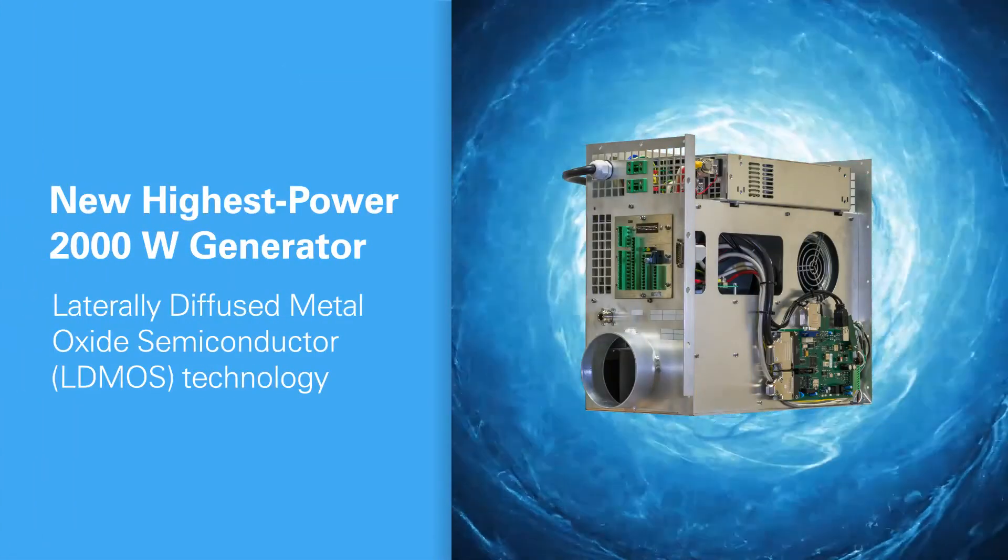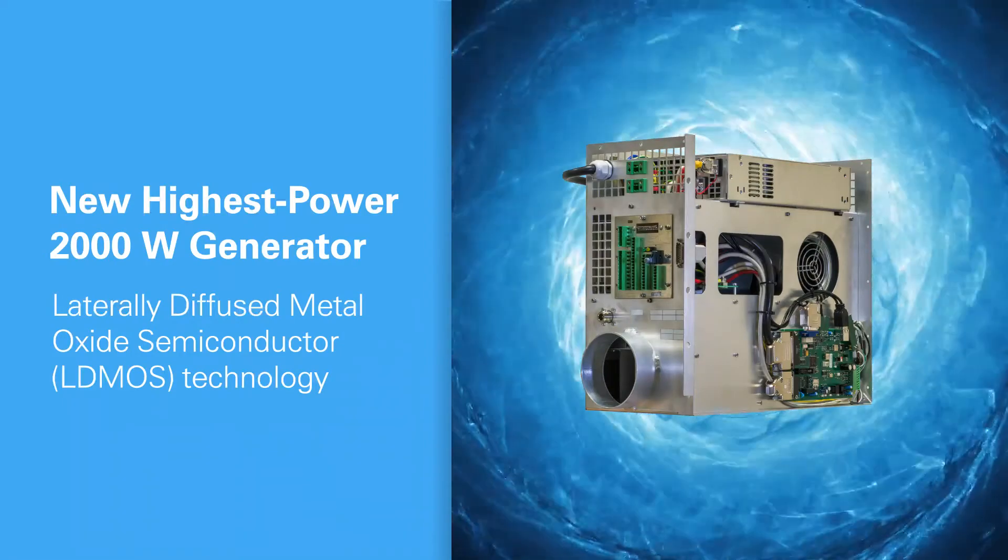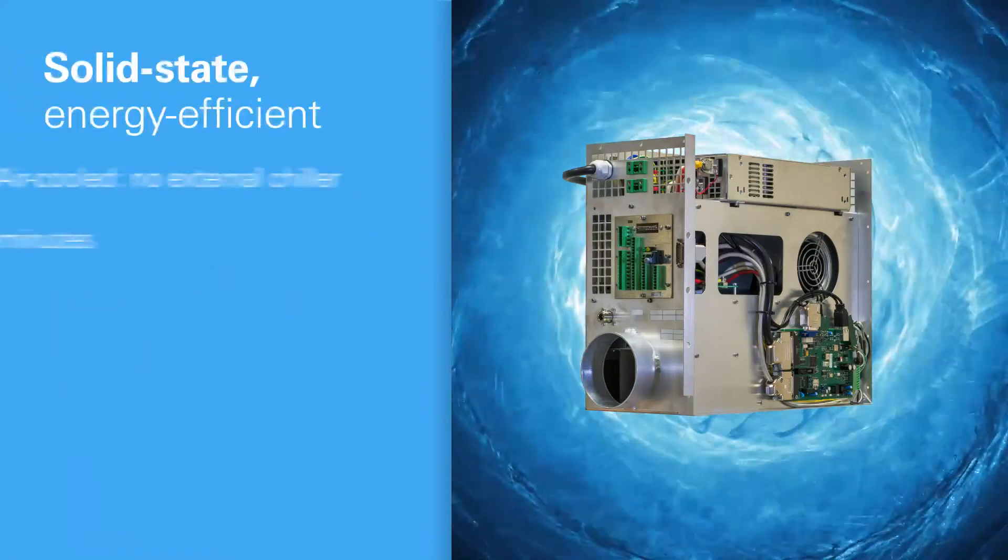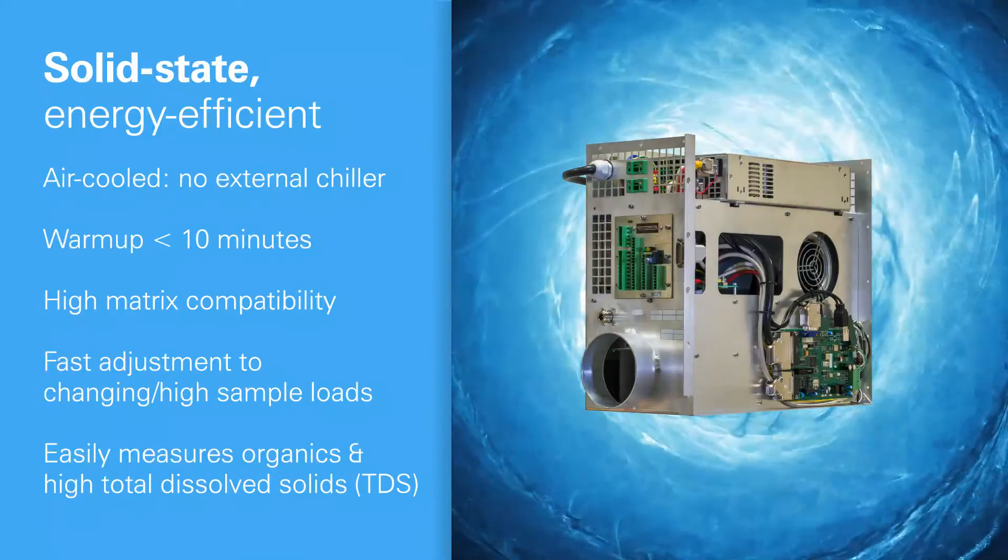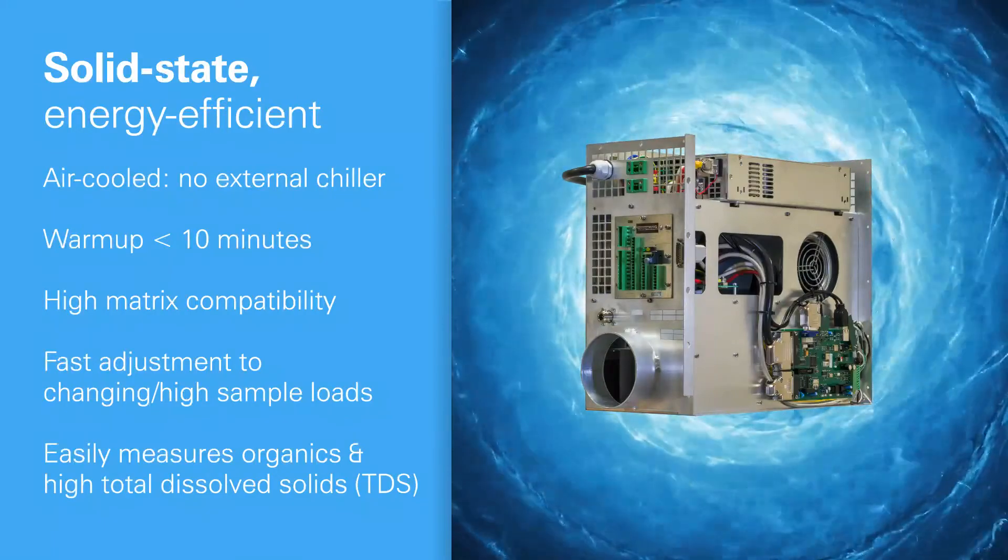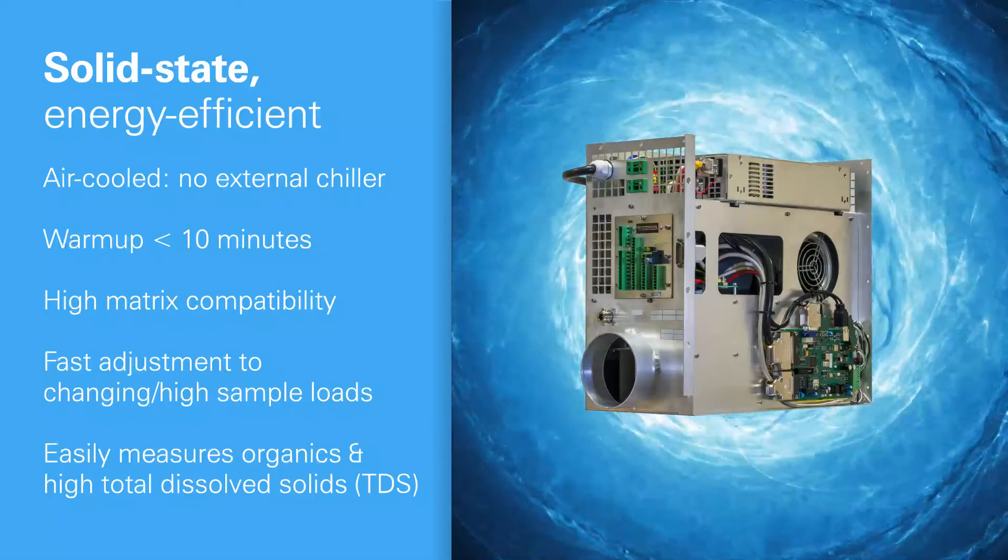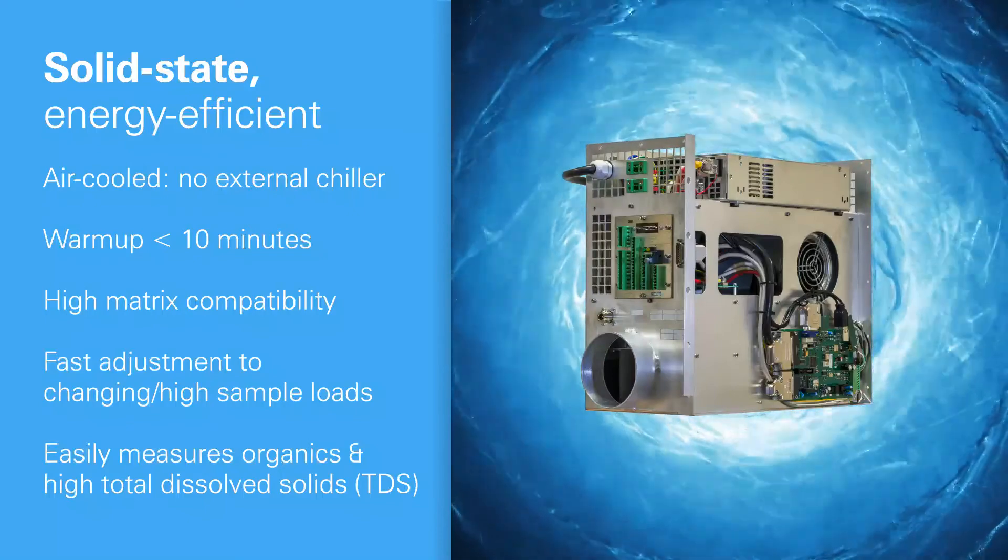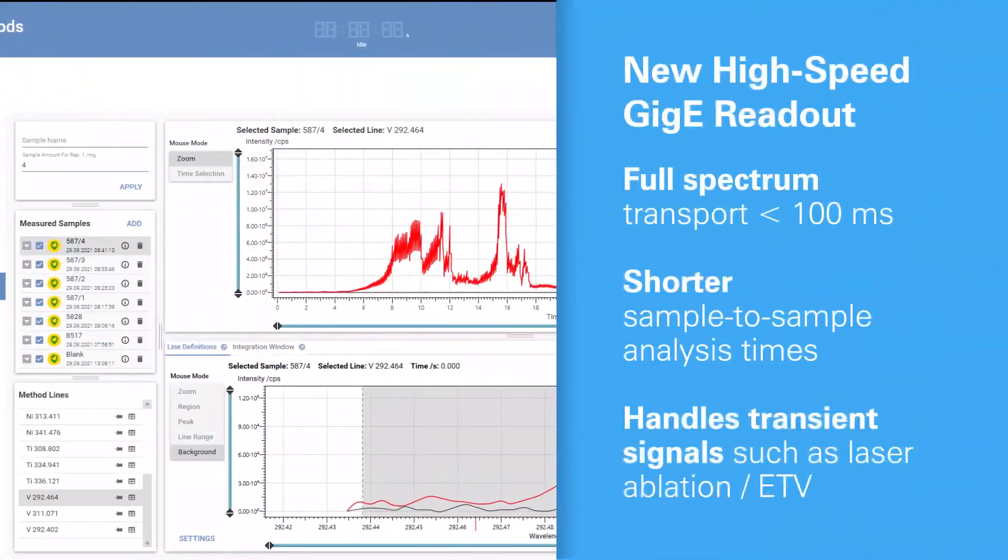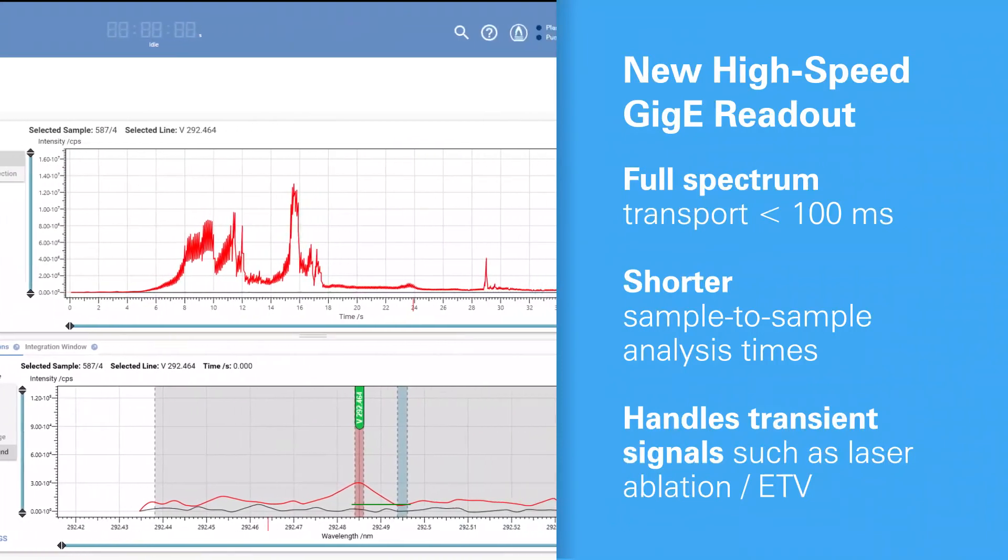SpectroArcos also adds a new agile long-life 2000-watt generator. You get no external chiller costs, fast warm-up, high matrix compatibility, and fast easy adjustment even for organics and high TDS. Plus, a new high-speed readout system helps cut analysis times.